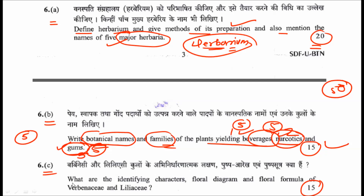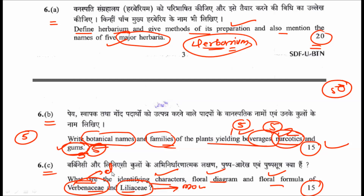The third sub-question asks for the identifying characters, floral diagram, and floral formula of Verbenaceae and Liliaceae. Liliaceae belongs to monocots while Verbenaceae belongs to dicots — so one example from each group. You have to describe their identifying characters, floral formula, and floral diagram for 15 marks.